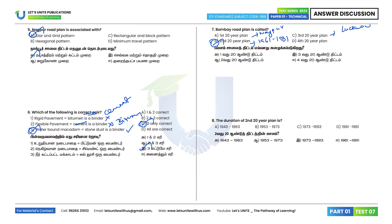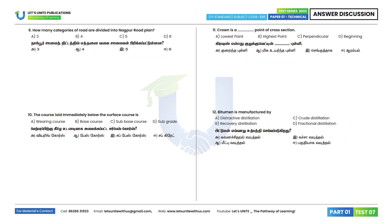8th question: The duration of the Second 20-Year Plan is 1961 to 1981. Option D is the correct answer. 9th question: How many categories of roads are divided in the Nagpur Road Plan? The Nagpur Road Plan has four types. Option C is the correct answer.